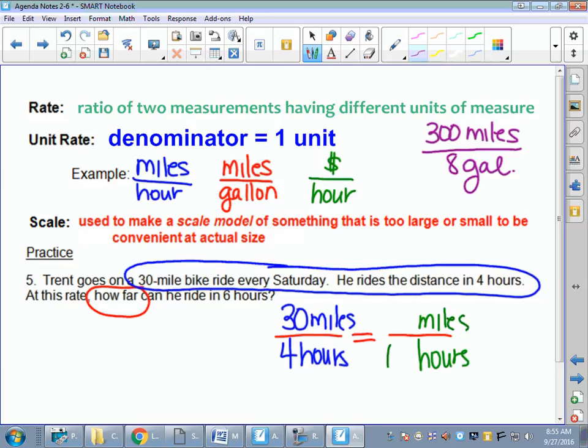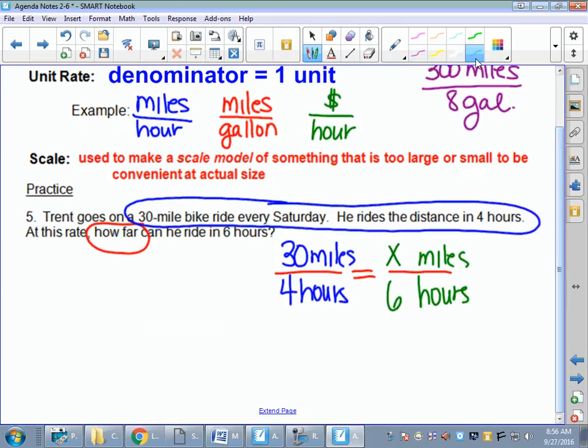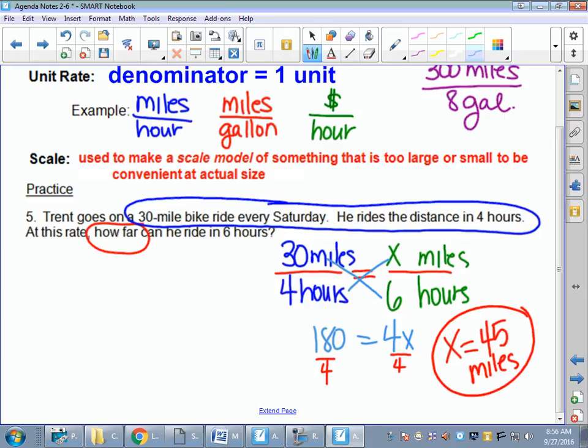We can just ignore the units and cross-multiply to solve this. So 30 times 6 is 180. 4 times X is 4 times X. Divide both sides by 4, and we get X equals 45 miles. Does that sound about right? Notice how I put my label on the answer.